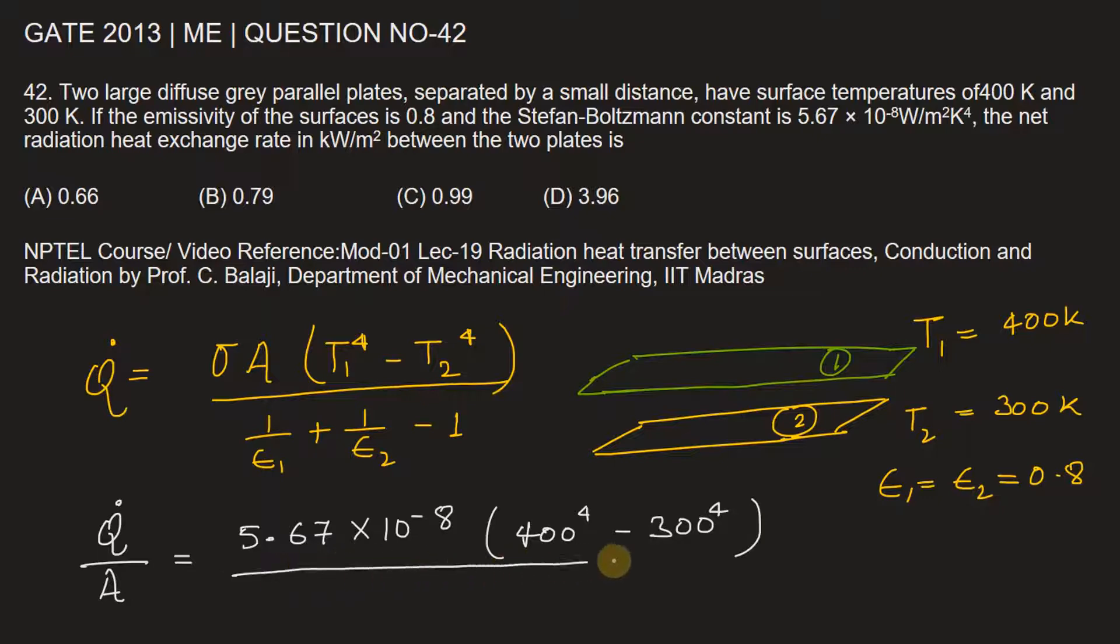All divided by 1 by epsilon 1 plus 1 by epsilon 2, and both are equal so we can write 2 by 0.8 minus 1.